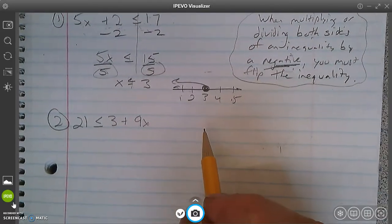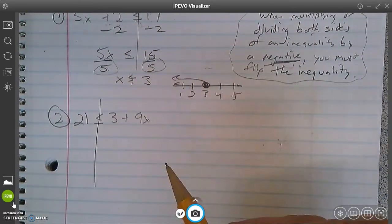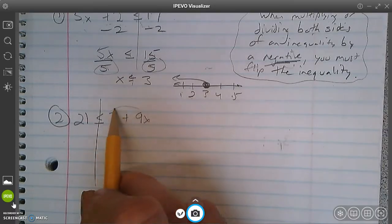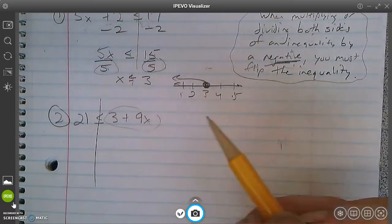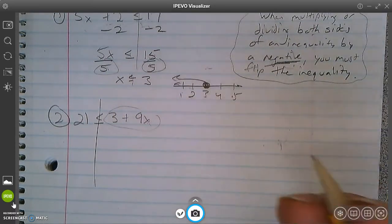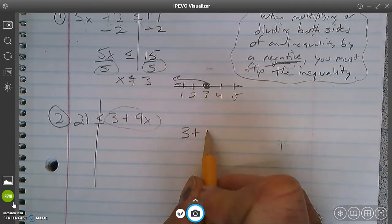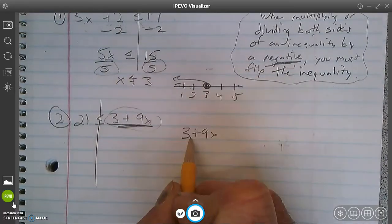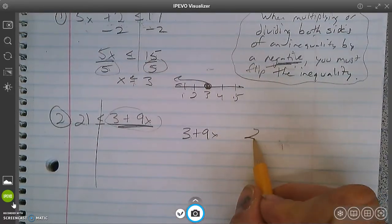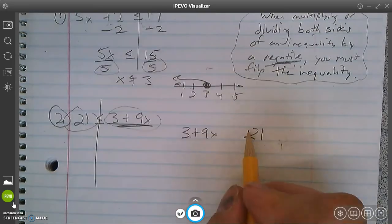Okay. Number 2. Write that one down. So this has the variable on the right. I don't really like that. I could solve it like this, but I'm actually going to reverse this. So I'm going to put 3 plus 9x. I'm going to copy this down. And I got the 21 on the other side. Boom, 21.